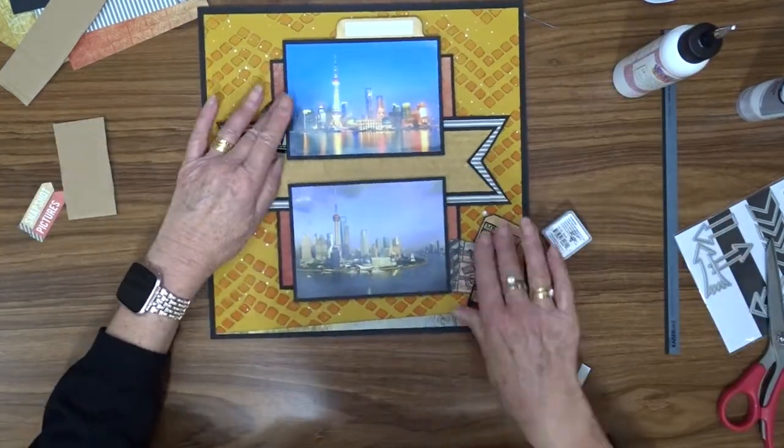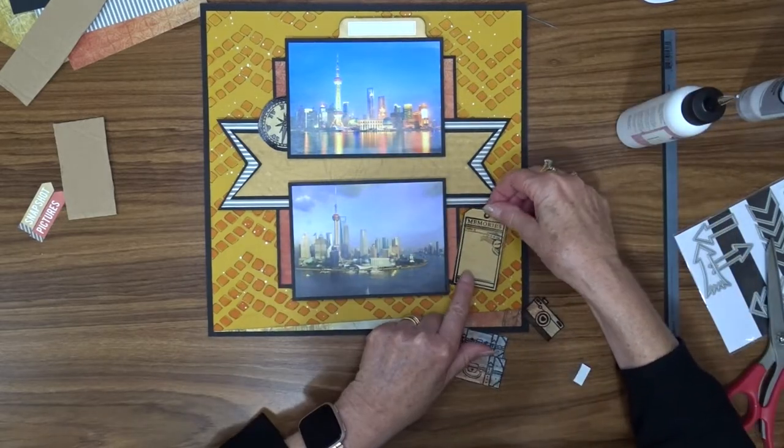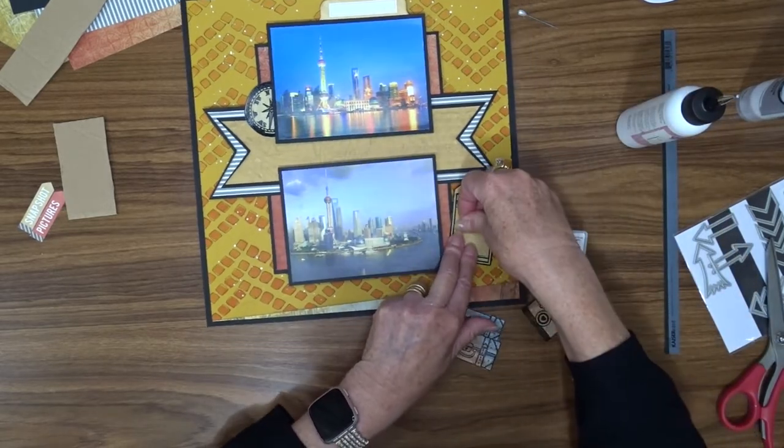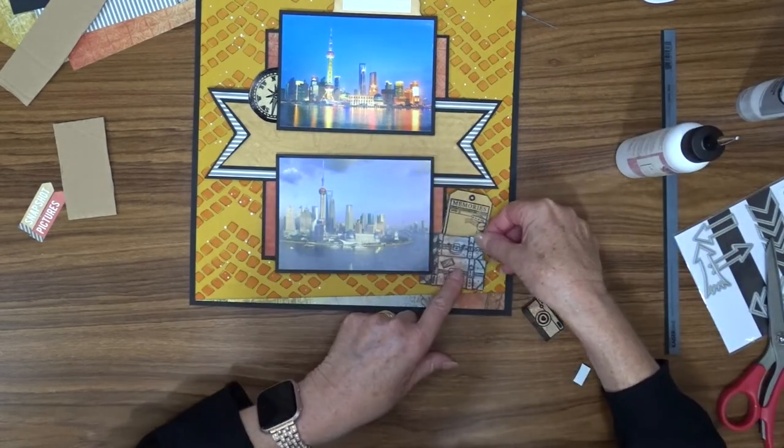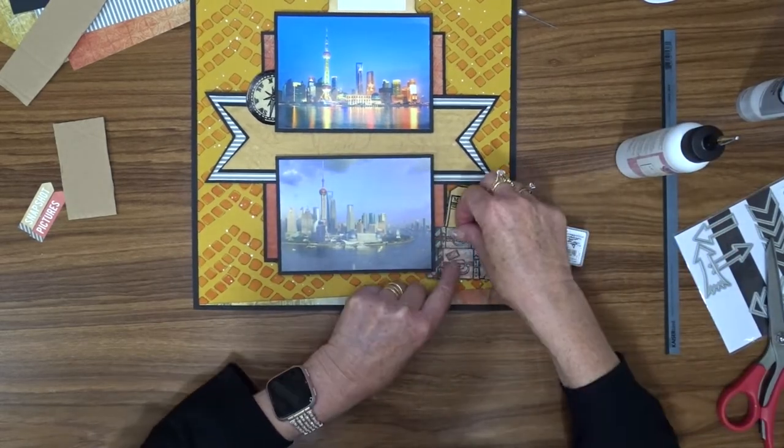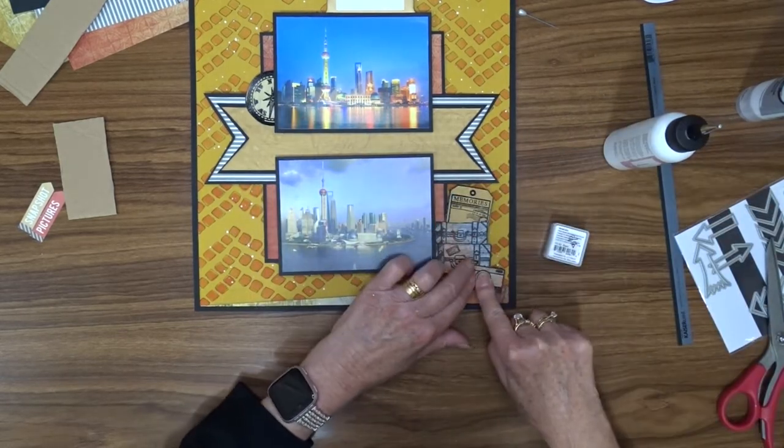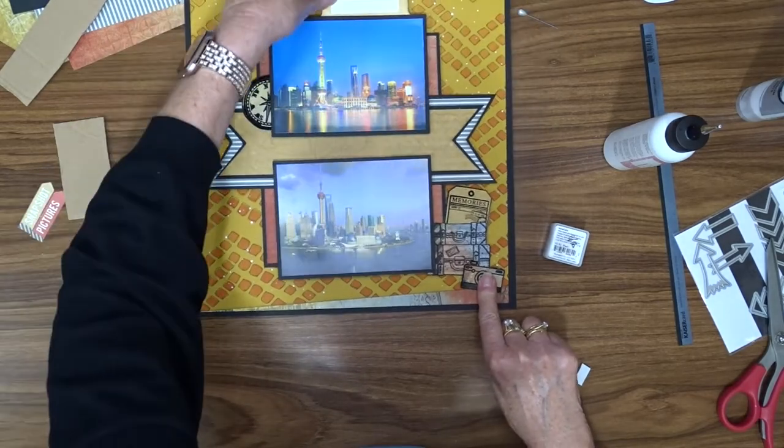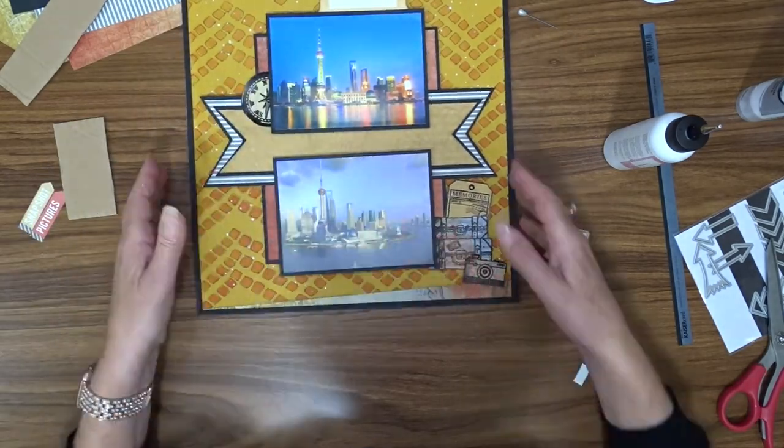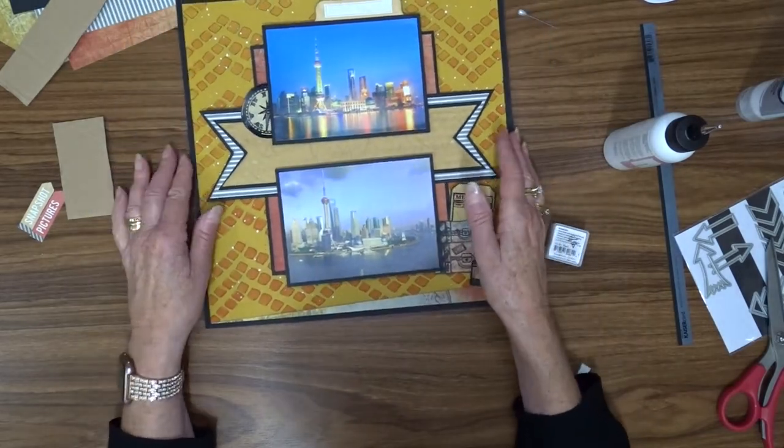And I will write on there the date that we were actually in Shanghai on this river cruise. And I also am going to use some images that I have stamped using one of the Kaisercraft stamp packs—I think it's the Now Boarding range. I have stamped it onto some of the pattern papers, heat embossed it, and fussy cut it. So I'm going to use those for my extra embellishments.